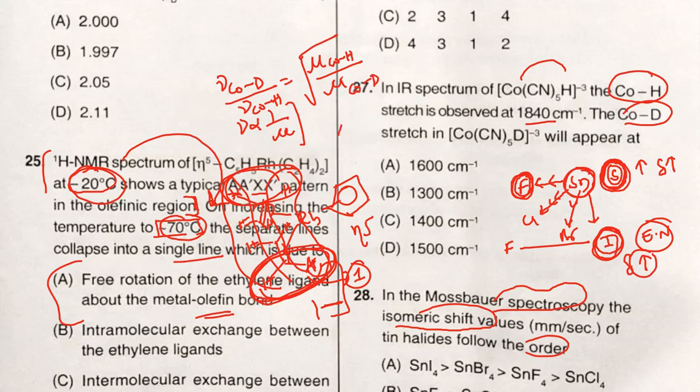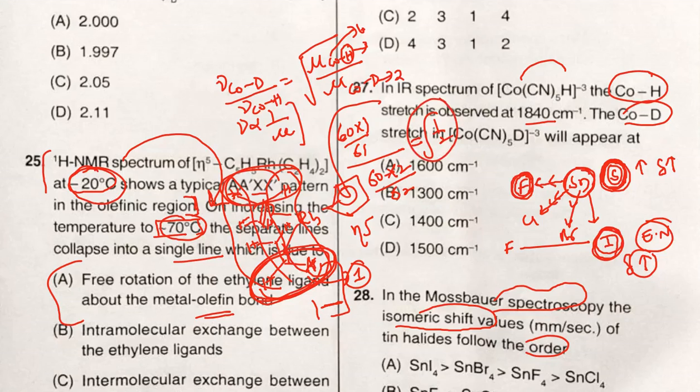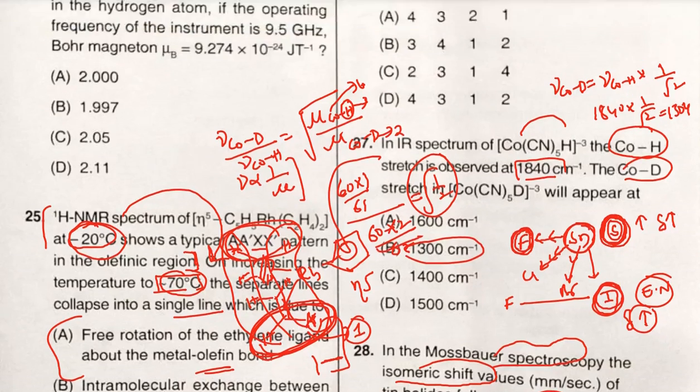We can take hydrogen mass as 1, cobalt mass as 60, deuterium mass as 2. From that we can get √(1/2). So ν(Co-D) = ν(Co-H) × 1/√2. The frequency of Co-H is given as 1840, just substitute: 1840 × 1/√2, from that you will get approximately 1300. So option B is the correct answer.